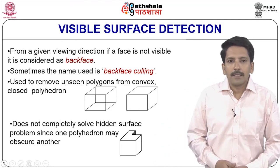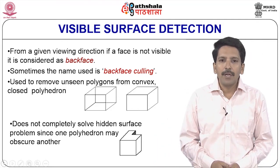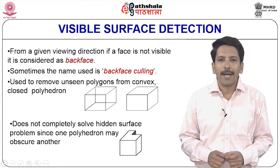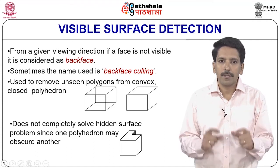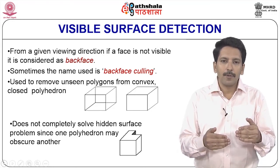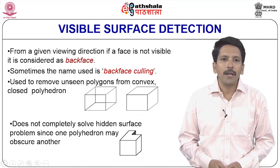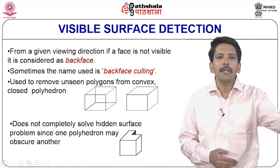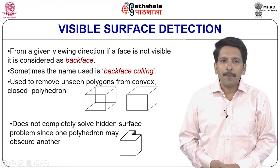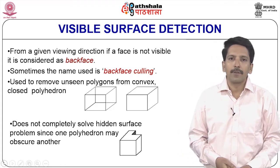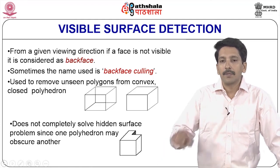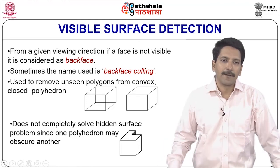From a given viewing direction, if a face is not visible it is considered a back face. The important observation is that given a viewing direction, if something is not visible from that position, we call it a back face. Sometimes the name 'back face culling' is used — you will find this terminology across different books.